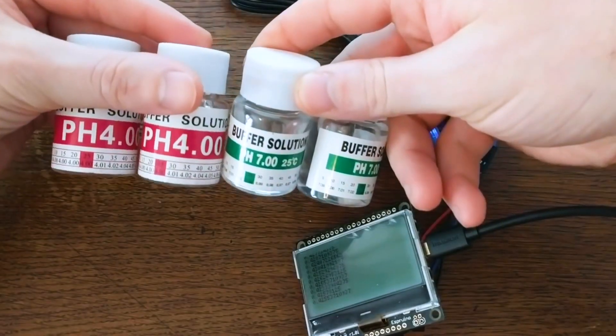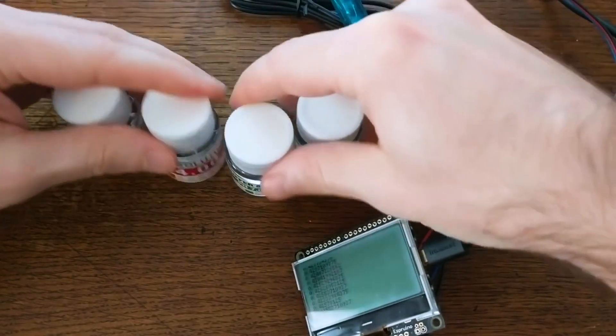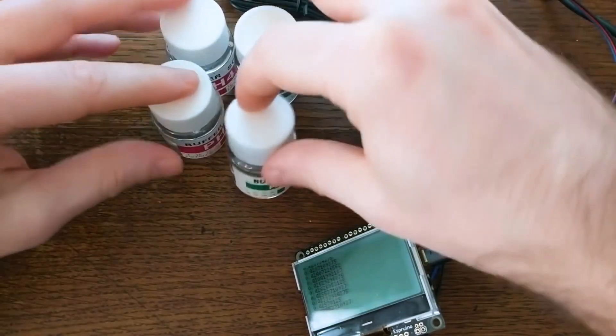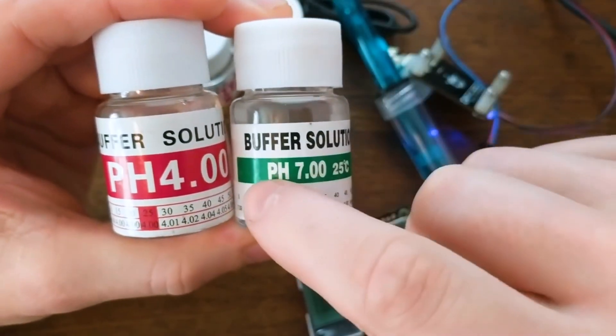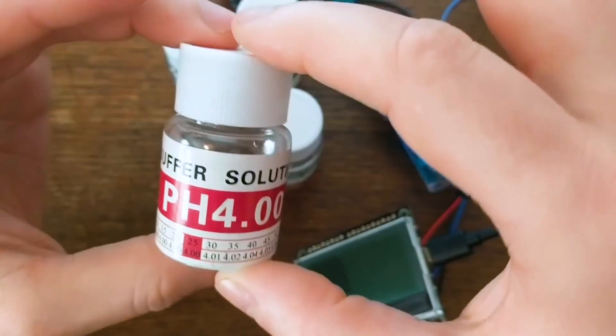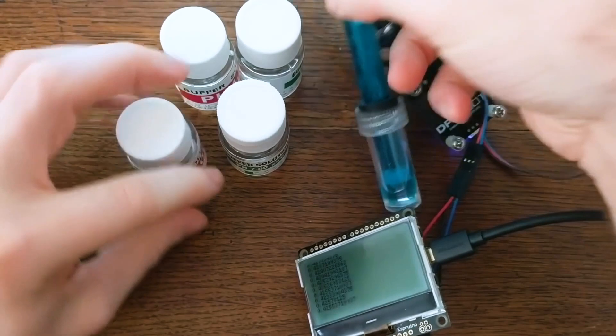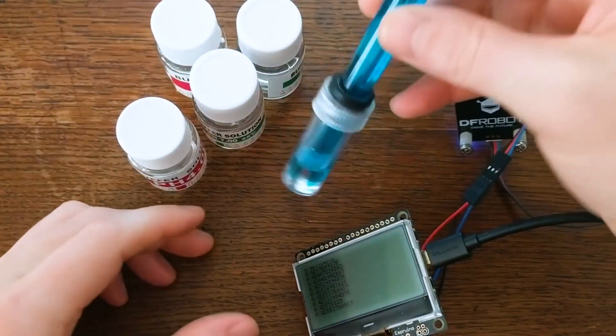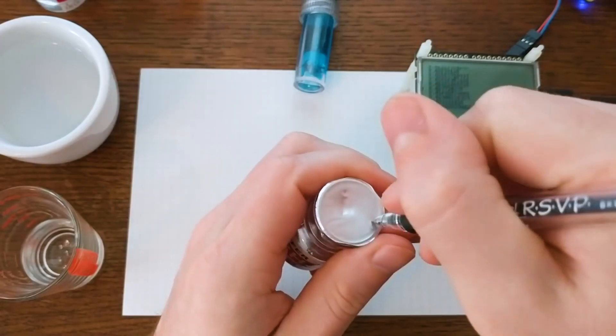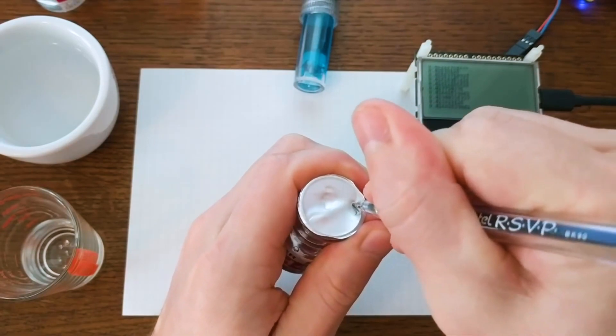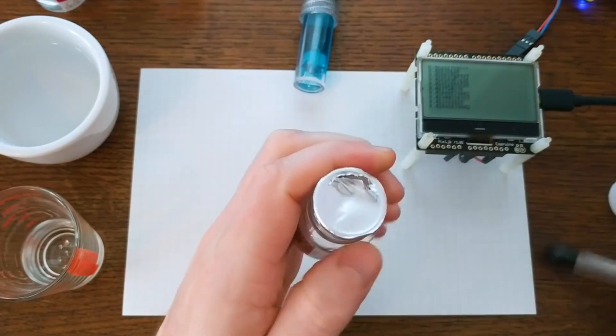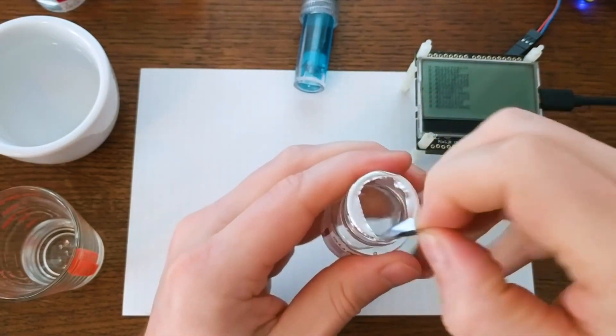But the kit comes with four bottles of solution. Two each of two different buffers. One of them has a pH of 7, and one of them has a pH of 4. We can use these two known solutions to calibrate our code so that when we take an analog measurement, we can predict what the pH is. In order to do that, I'll first need to take a measurement of each one of these solutions and see what the analog reading is.